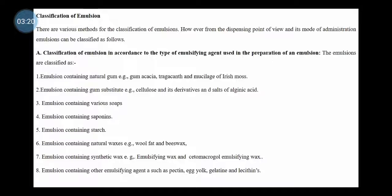The next class is emulsions containing natural waxes. Just like natural gums, waxes obtained naturally are called natural waxes. Emulsions containing natural wax include wool fat and beeswax. Beeswax is generally obtained from honeycomb. Then, emulsions containing synthetic wax — those prepared synthetically in a lab. The example is emulsifying wax.